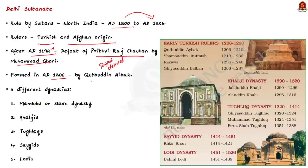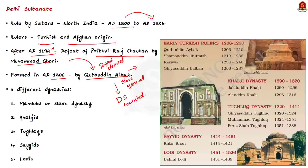Why AD 1206? Because Mohamed Ghori died in this year. Control of his Indian positions was passed on to Qutubuddin Aibak, who was Ghori's slave general. Aibak became the first independent Muslim ruler of Northern India and he founded the Delhi Sultanate. The slave general Qutubuddin Aibak became the first Sultan. Sultans then ruled for more than 300 years, from around 1206 to 1526 AD.